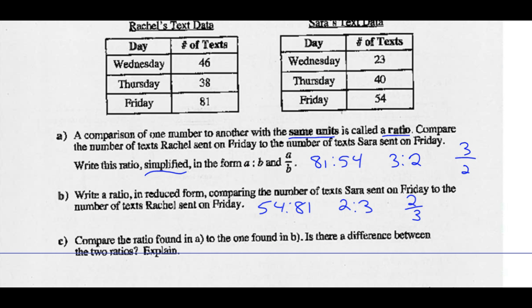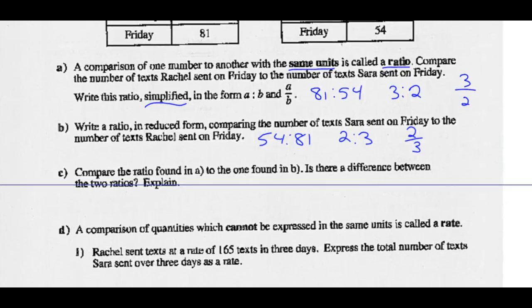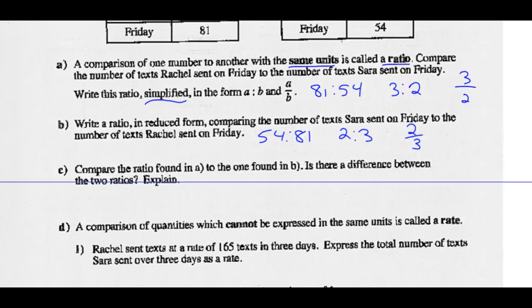Part C, compare the ratio found in A to the one found in B. Is there a difference between the two ratios? Well, yeah, they're not equal, that's for sure. 3 halves doesn't equal 2 thirds. But we would call these reciprocals. So they are reciprocals of each other.